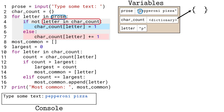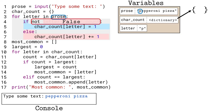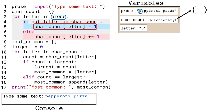To evaluate the condition, Python skips the 'not' for now and looks at the rest of the expression. The 'in' operator asks Python if the letter variable on the left exists as a key in the 'char_count' dictionary on the right. The dictionary is still empty, so it has no keys, and Python evaluates the expression to be false. Now Python looks at the 'not' operator and inverts the false expression to be true. Because the condition of the if statement is true, Python runs line 5, storing a key-value pair in the dictionary where the key is the lowercase 'p' and the value is 1.